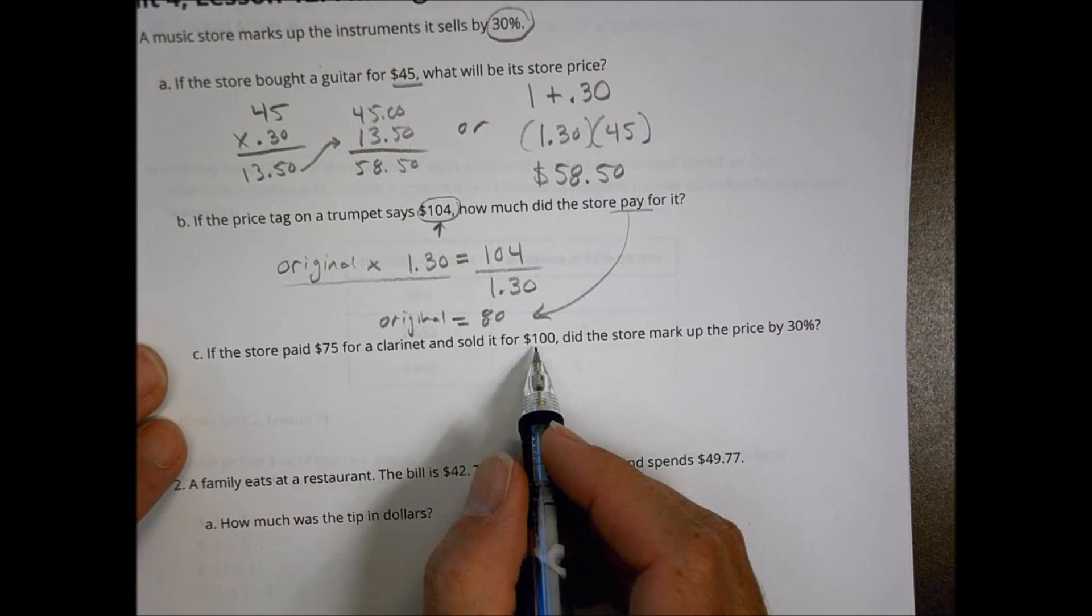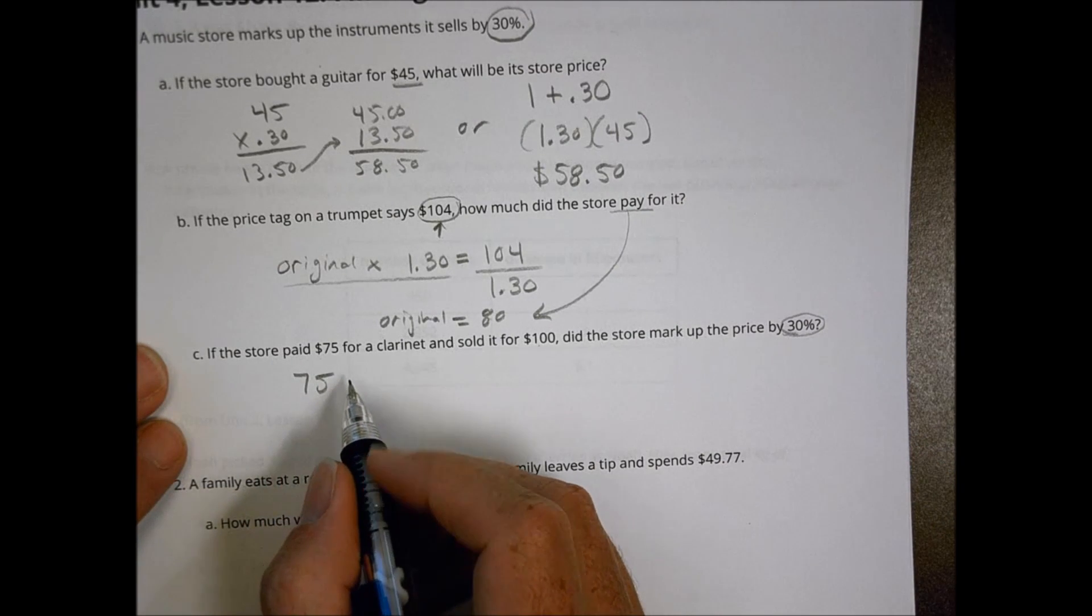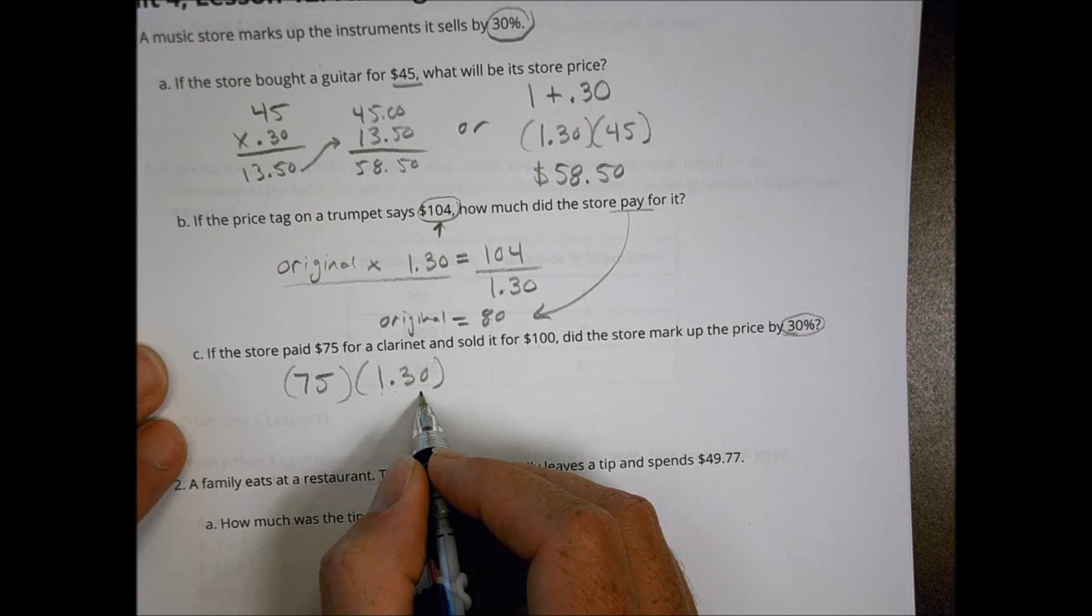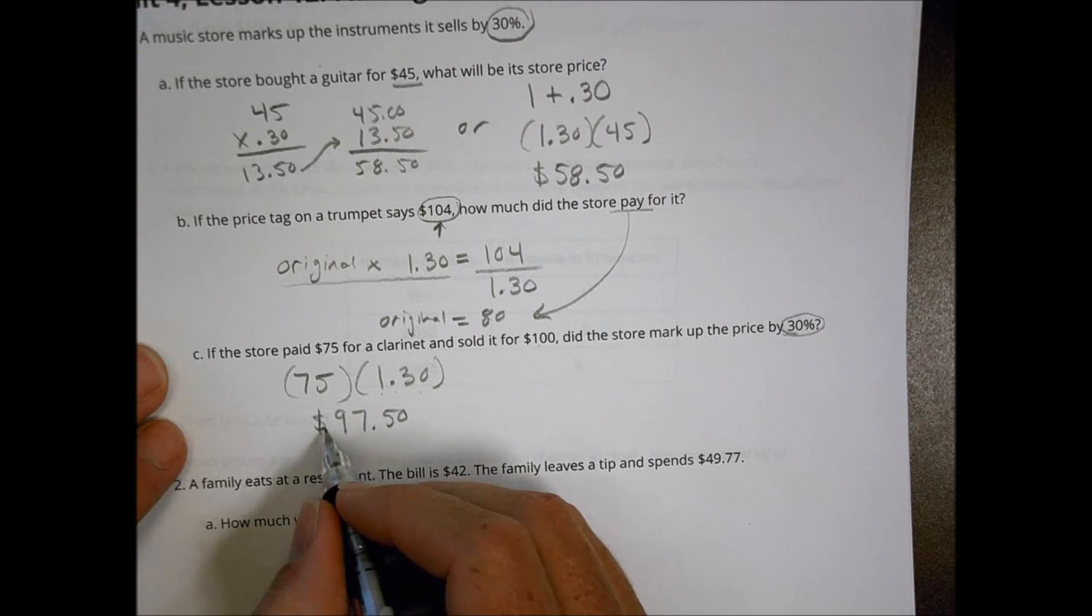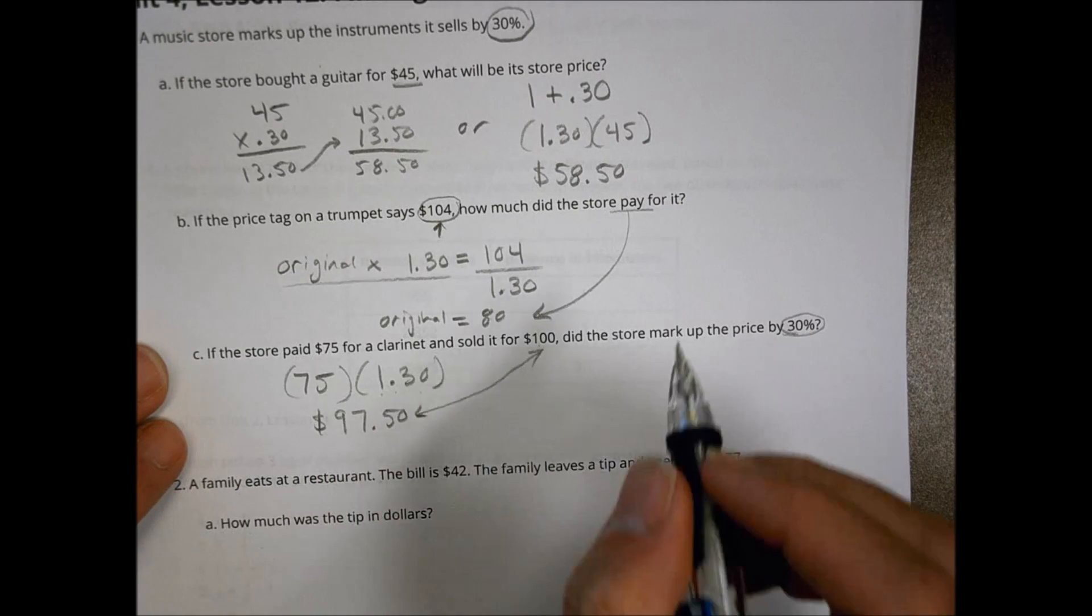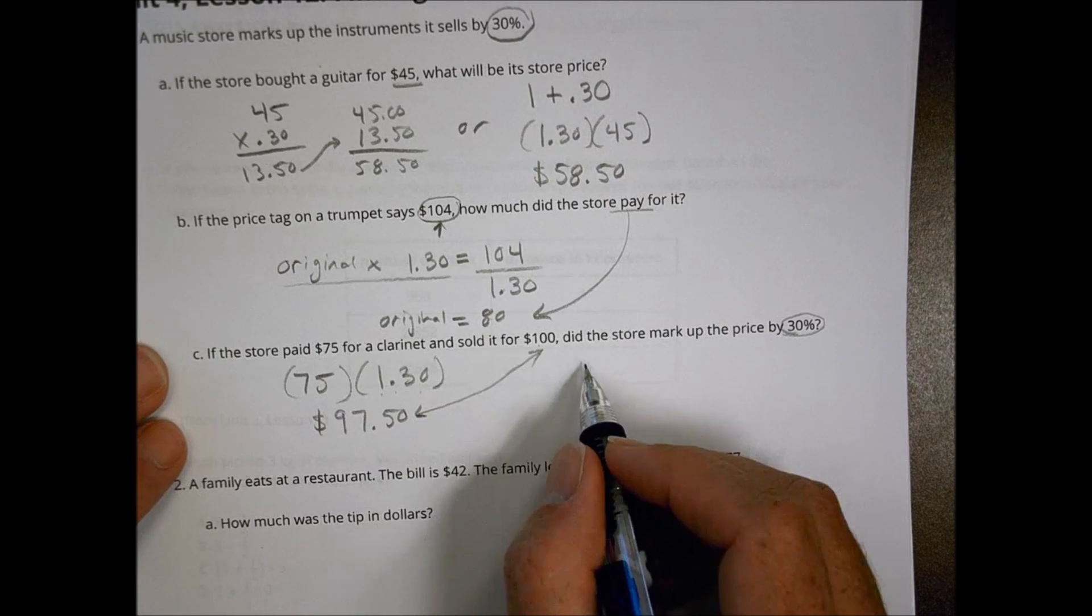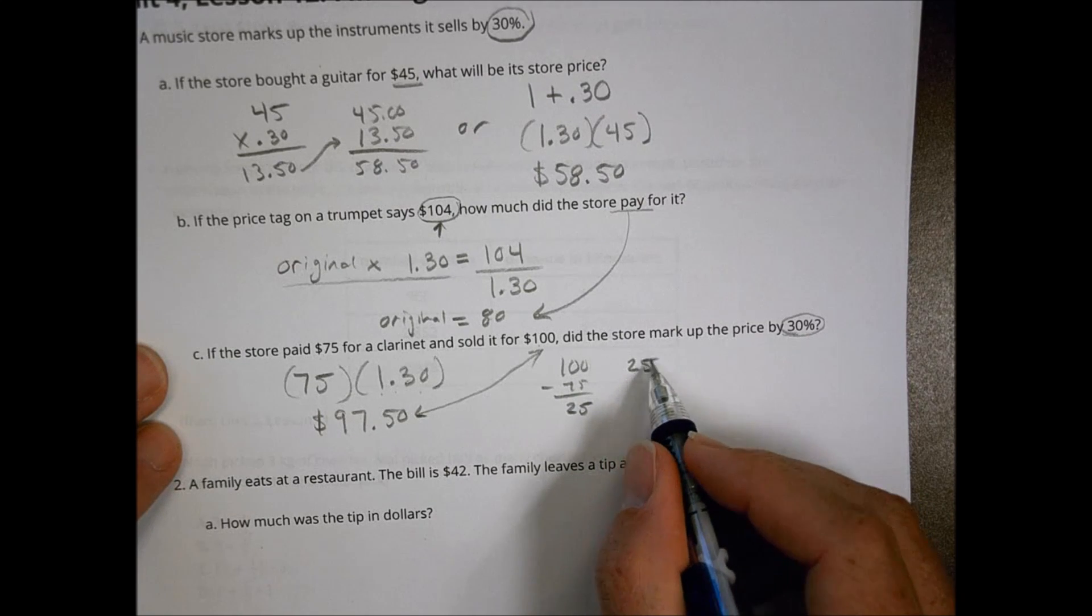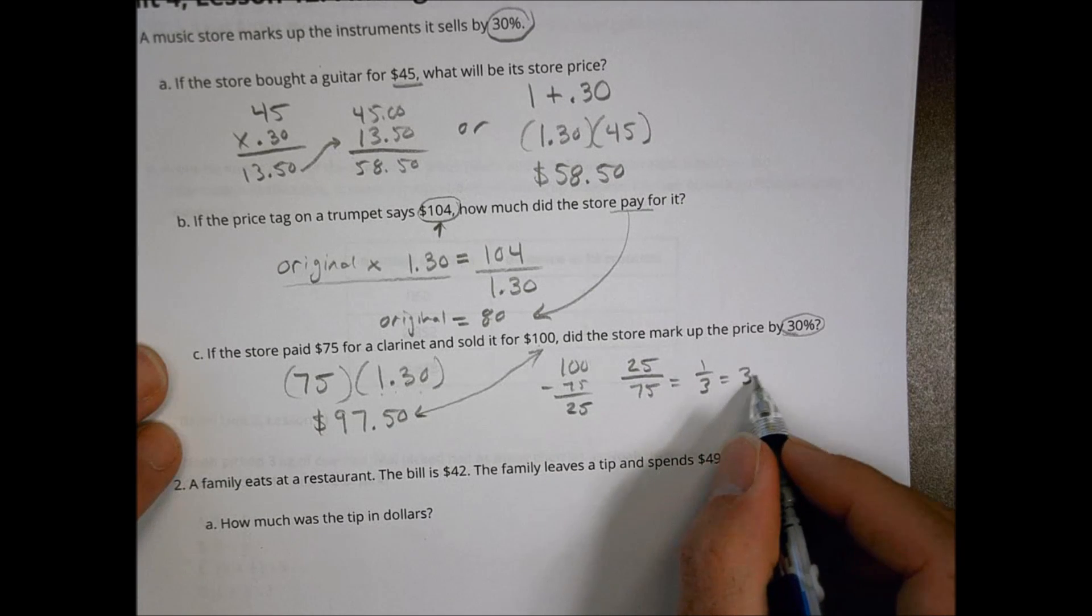If the store paid $75 for clarinet and sold it for $100, did the store mark up their price by 30%? Well, let's find out. If the original is 75, and we take that amount and we multiply it by 1.30. Again, that's the original plus 30%. 75 times 1.30 is $97.50. So is that amount equal to that amount there? We would say, no, it's not. They actually sold it for more than 30%. And in our case here, we could look and say, well, this is actually going to be, if $100 minus 75, they sold it for $25 more. So 25 is what percent of the initial price, which was 75? Well, that reduces to a third, which is 33%. So they actually sold it for like 33% more than the initial value there.